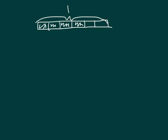Here is a tape diagram of a fraction. What does this represent? Well, it's divided into six parts, and we're looking at one, two, three, four — so the fraction we are looking at is four-sixths.